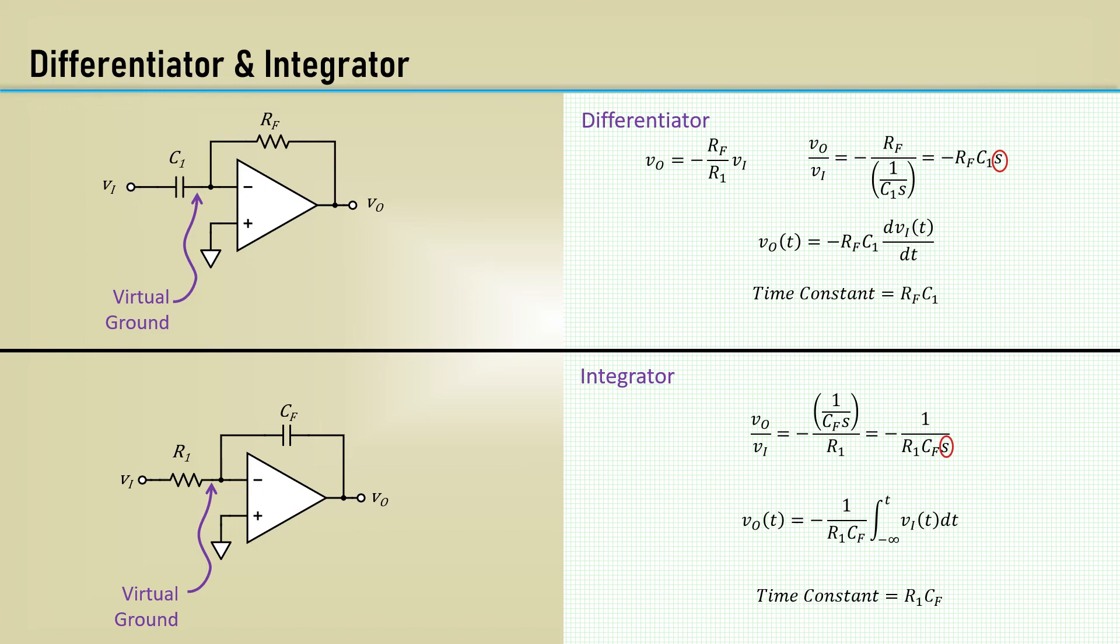But what's happening is very simple. When a step function happens at the input, due to the virtual ground, there is a constant current in R1. This constant current flows through Cf since there is no current flowing into the op-amp input. Therefore, constant current in a capacitor makes it charge linearly.